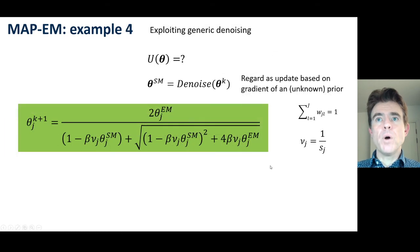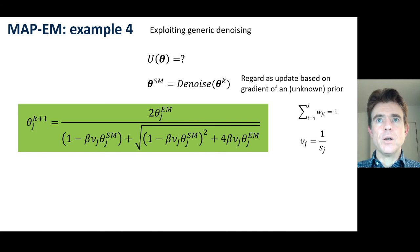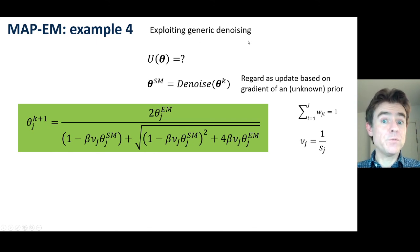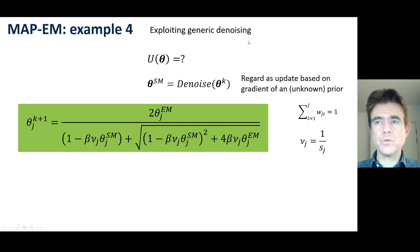I'll give one more example, because like Example 2, this one really comes in when looking ahead to deep learning-based methods in PET image reconstruction. Here we want to exploit a generic denoising method — for example, a convolutional neural network, a median filter, or a Gaussian filter.